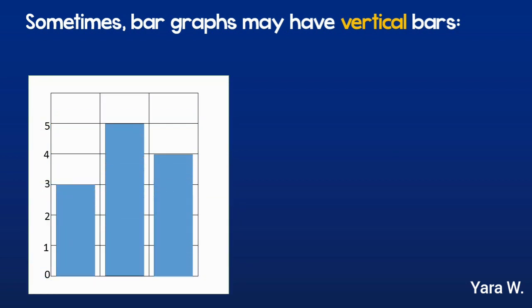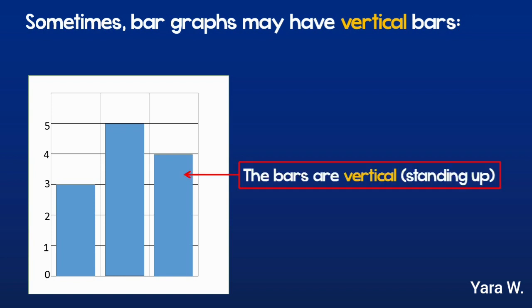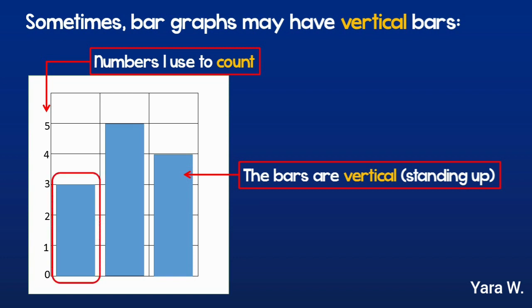Look at this picture. Notice how the bars look — they look like they are standing up, so that's what I call vertical. This means the numbers used to count will be on the side. Now if I want to read this number, I am going to extend the line to the side and check the number.